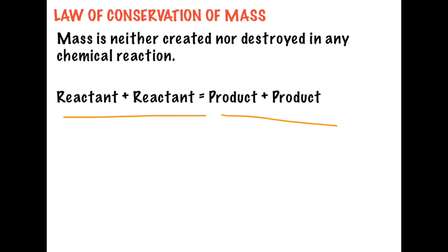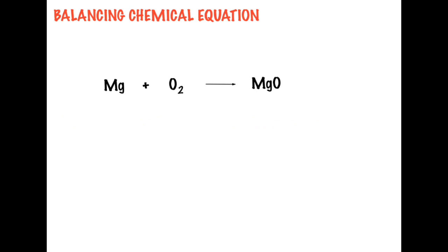The equation must have the same number of atoms of the same kind on both sides. Also, the mass of all the reactants must equal the mass of the products. Now let's take for example magnesium reacting with oxygen to form magnesium oxide. In balancing an equation, the first thing you need is the correct formula.